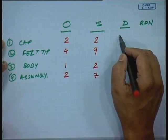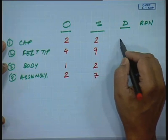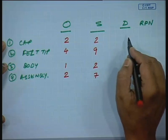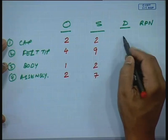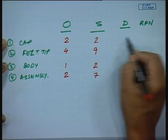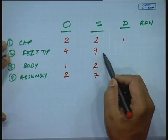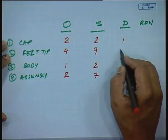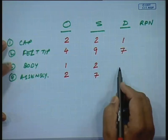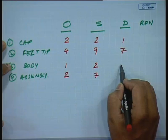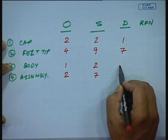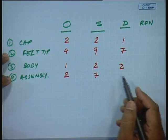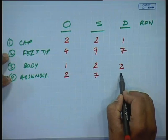For detectability — recall that a low number means a fault can be easily detected. If there is a fault in the cap, we can all see it from outside, so I give it a low number. For the felt tip, if there is a defect I cannot see it unless I write with it, so I give it a high number. For the body, if there is a crack I can see it, so it can be easily detected — low number. For the assembly, if it has failed it can be easily detected, so again a low number.